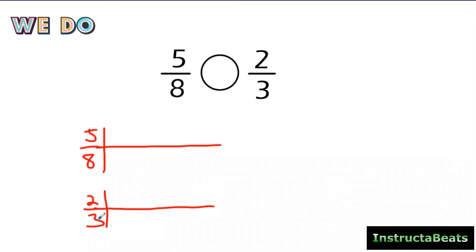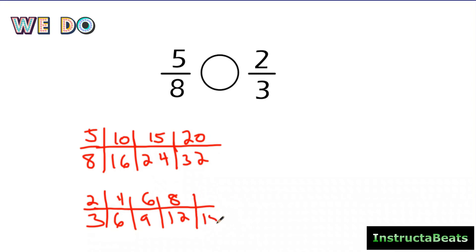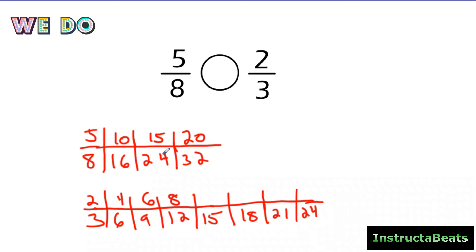So I'm going to do three, six, nine, twelve — numerators: two, four, six, eight. Then for eight: eight, sixteen, twenty-four, thirty-two — numerators: five, ten, fifteen, twenty. I have my list of equivalent fractions for each. I don't see any common denominators yet — right now we're looking only at the denominators. I'm already up to sixteen, twenty-four, thirty-two here, but I only got to twelve for my thirds. So I keep going: twelve, fifteen, eighteen, twenty-one, twenty-four — and I can stop right there because I found a common denominator: twenty-four and twenty-four.